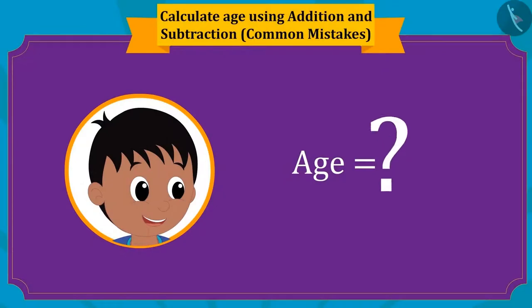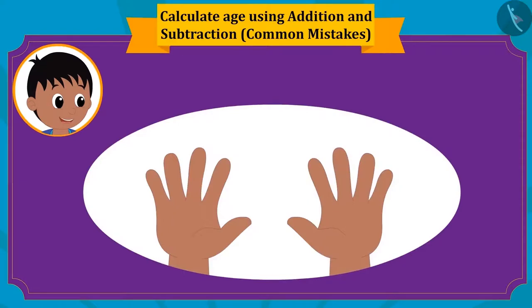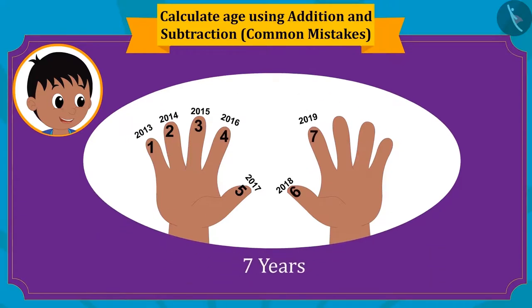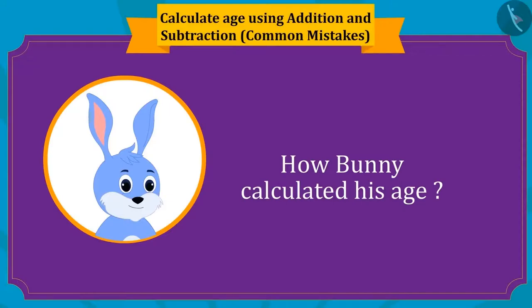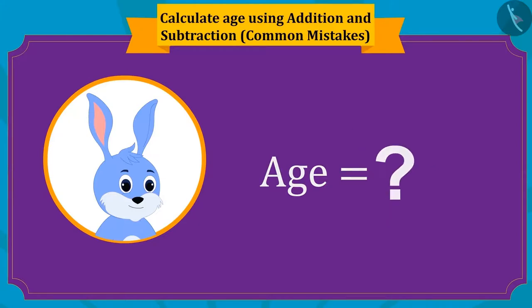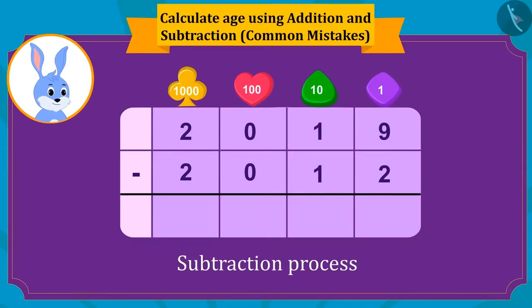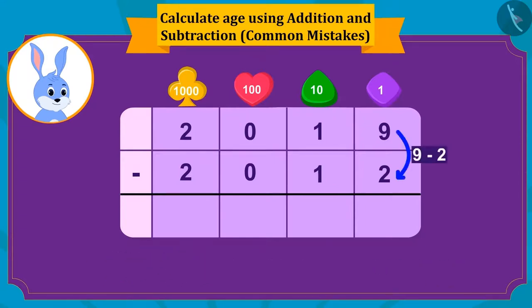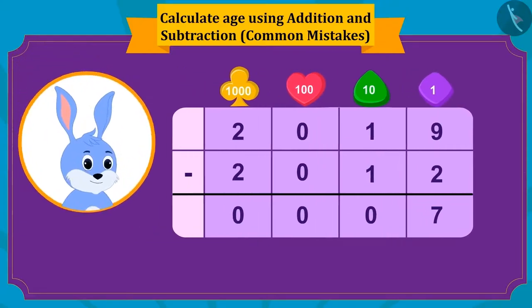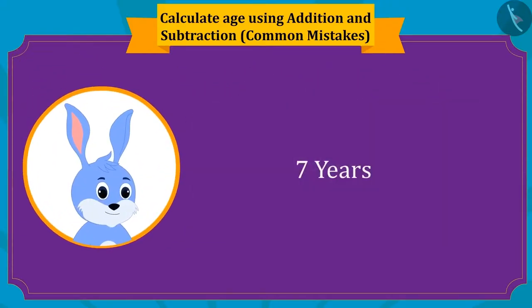So how can we find the right age of Raju? By starting the count from 2013 on fingers, we can find the right age of Raju. So how old is Raju? 7 years. Now let's see how Bunny calculated his age. Bunny calculated his age by using the subtraction process. Has Bunny done the subtraction correctly? Yes, Bunny has done the subtraction right. Hence, Bunny calculated his age as 7 years, which is correct.